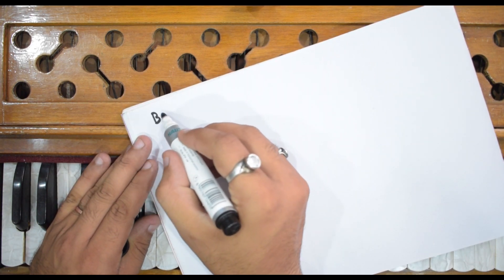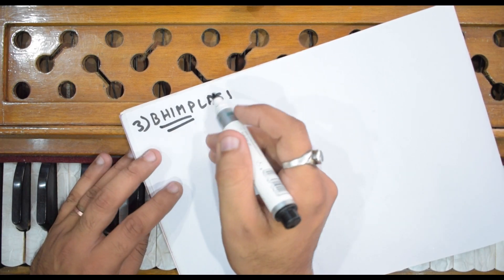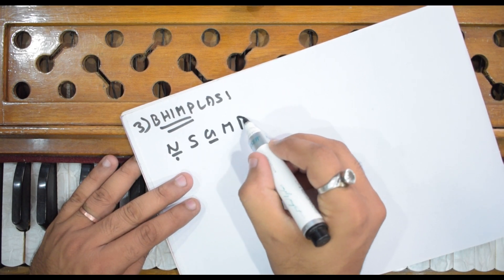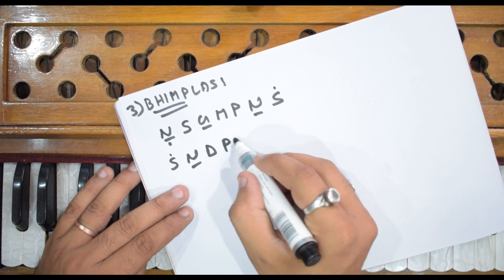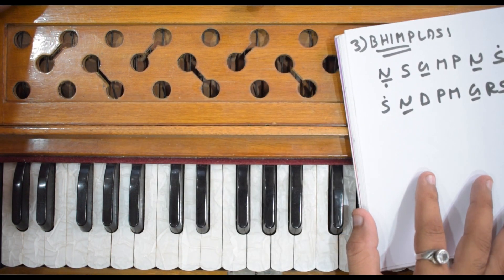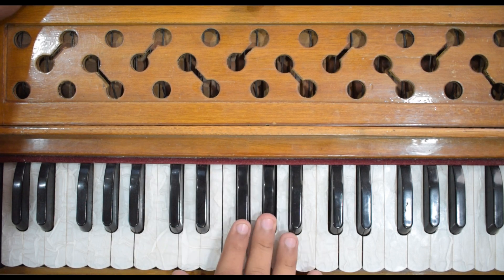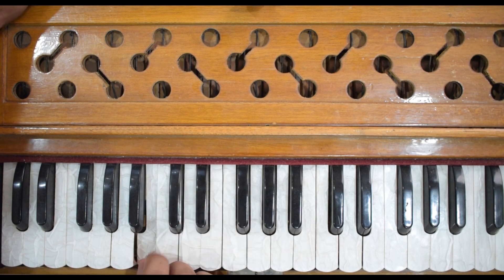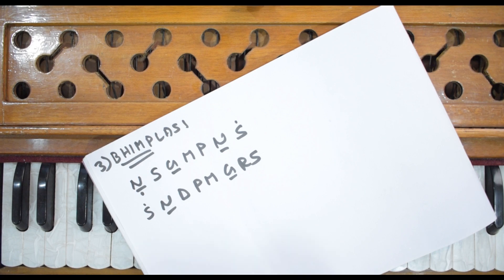The third important raag is Raag Bhimpalasi. In this raag, the aroha starts from Mandr Saptak Ni: Ni Sa Komal Ga Ma Pa Ni Sa. And the avaroha is: Sa Ni Dha Pa Ma Komal Ga Re Sa. A very popular song in this raag is 'Naino Mein Badra Chaye'.